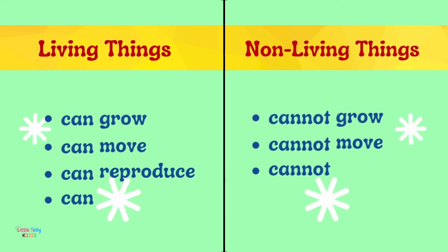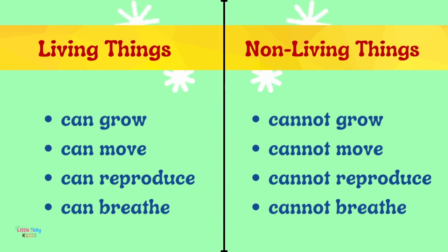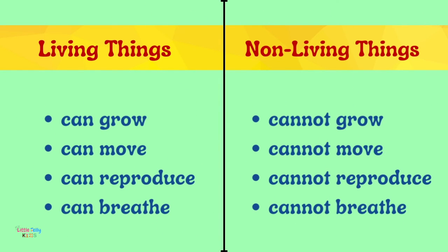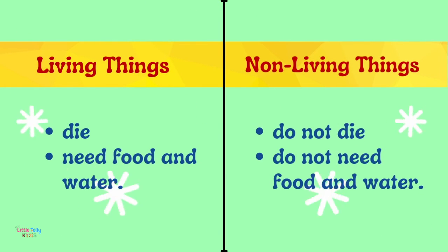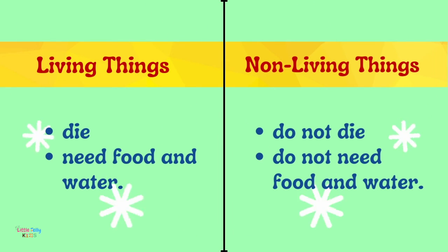Let's see the difference between living things and non-living things. Living things can grow; non-living things cannot grow. Living things can move; non-living things cannot move. Living things can reproduce; non-living things cannot reproduce. Living things can breathe; non-living things cannot breathe. Living things die; non-living things do not die. Living things need food and water; non-living things do not need food and water.